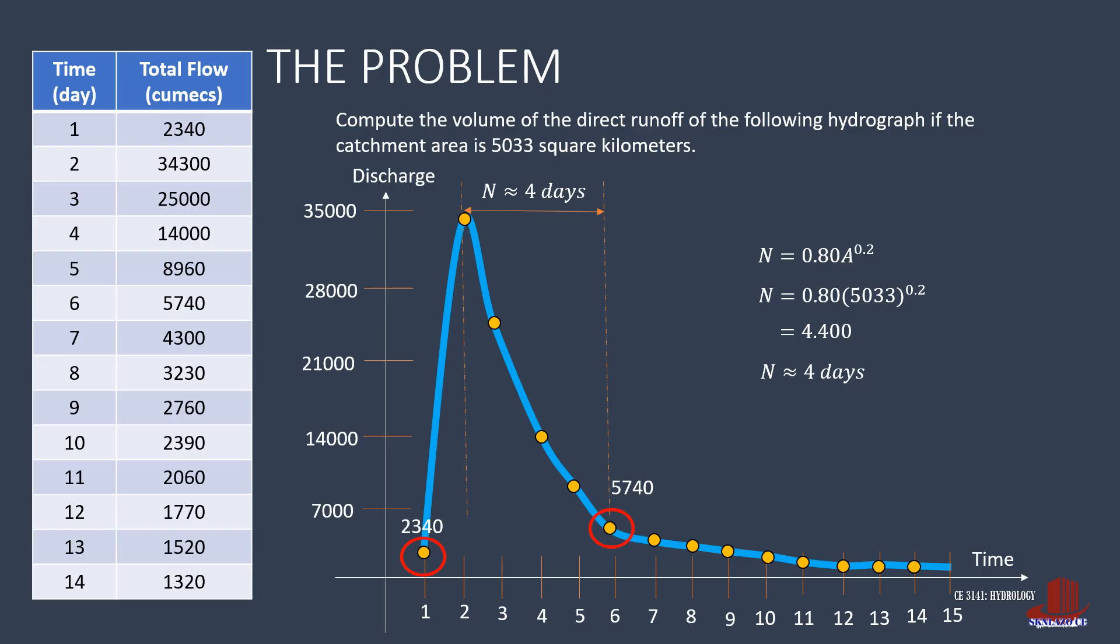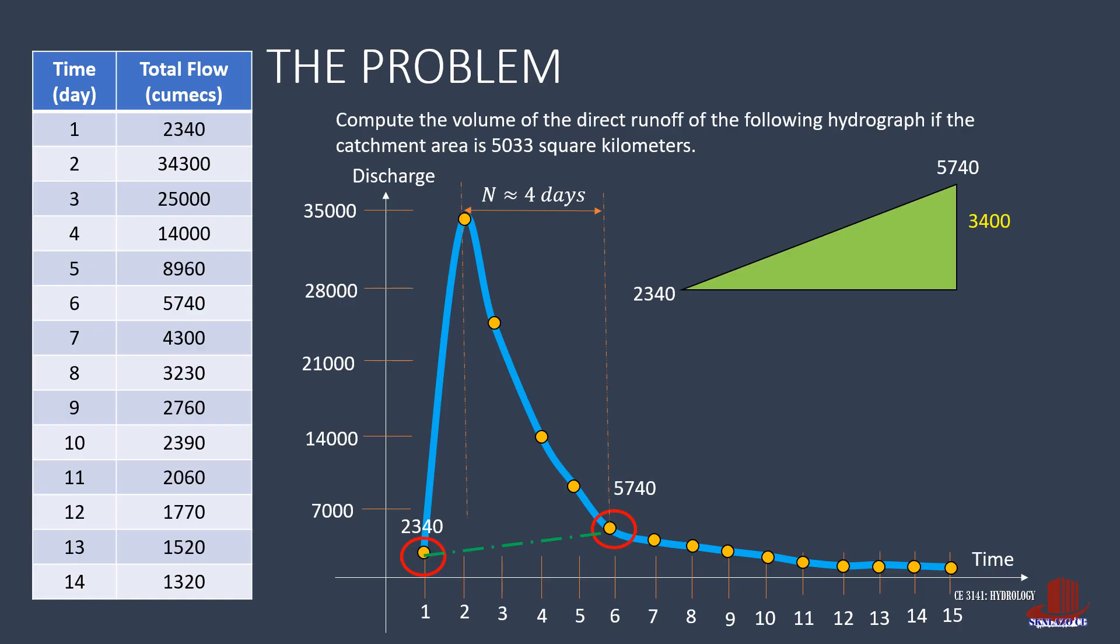So, with the identification of these two points, work on a single line method by just connecting them to separate the base flow from direct runoff. Zooming in on the separator, what we have is a triangle with a lower point as 2340 and a higher vertex of 5740. Take the difference of height. That's 5740 less 2340, giving 3400 cumecs.